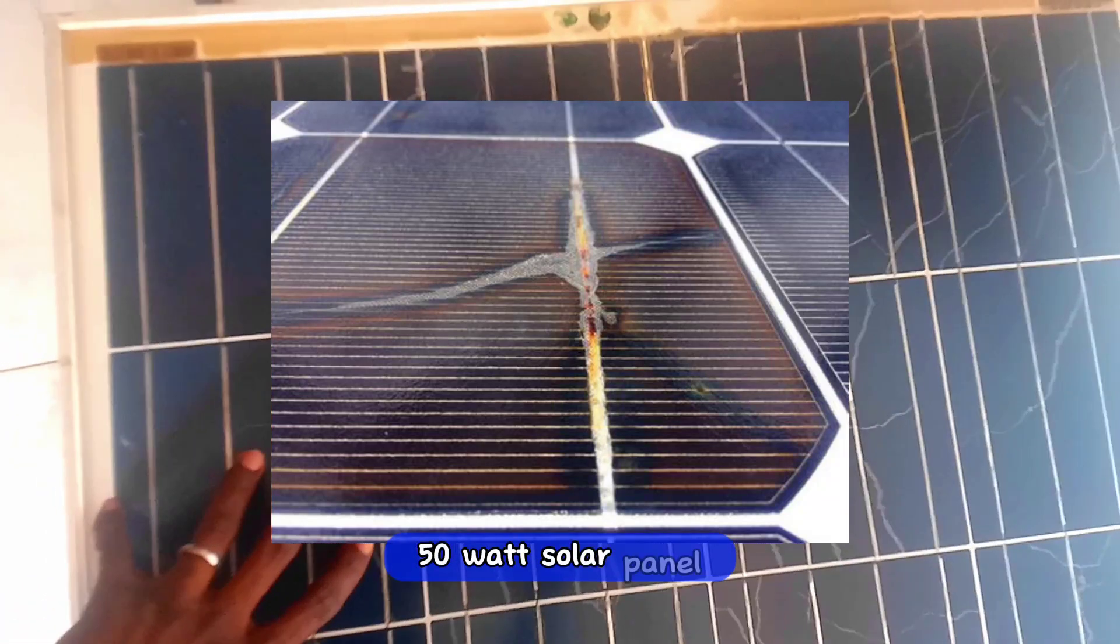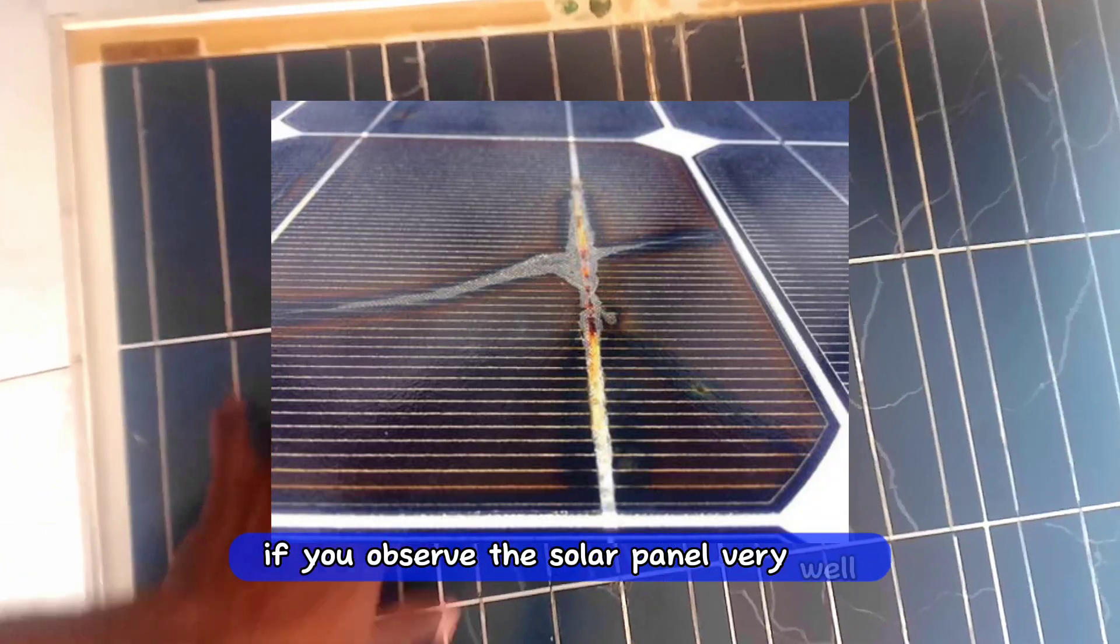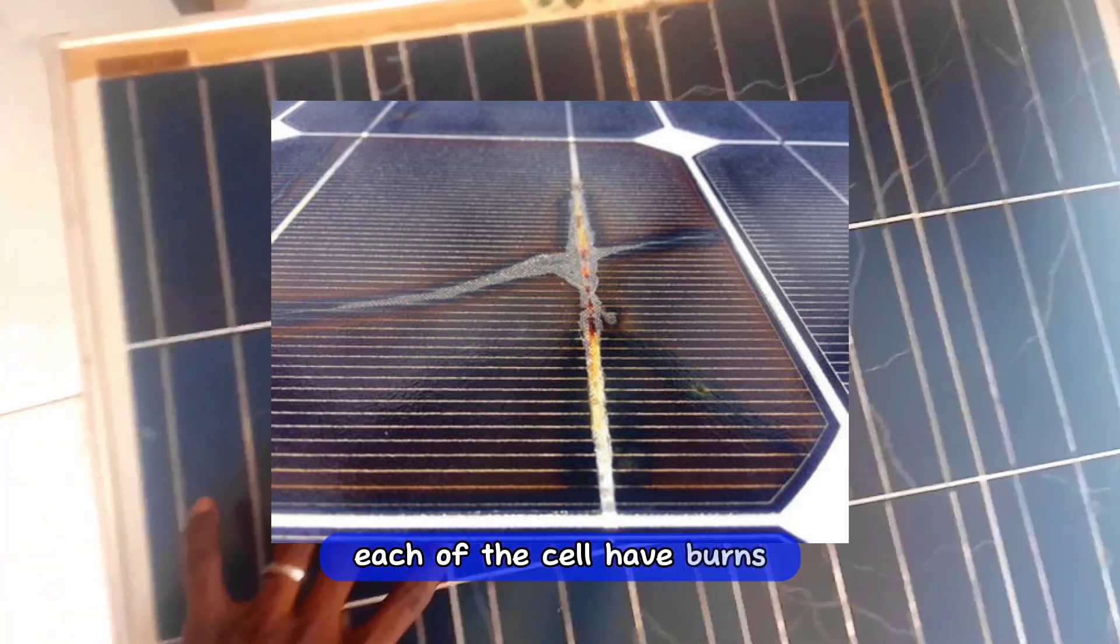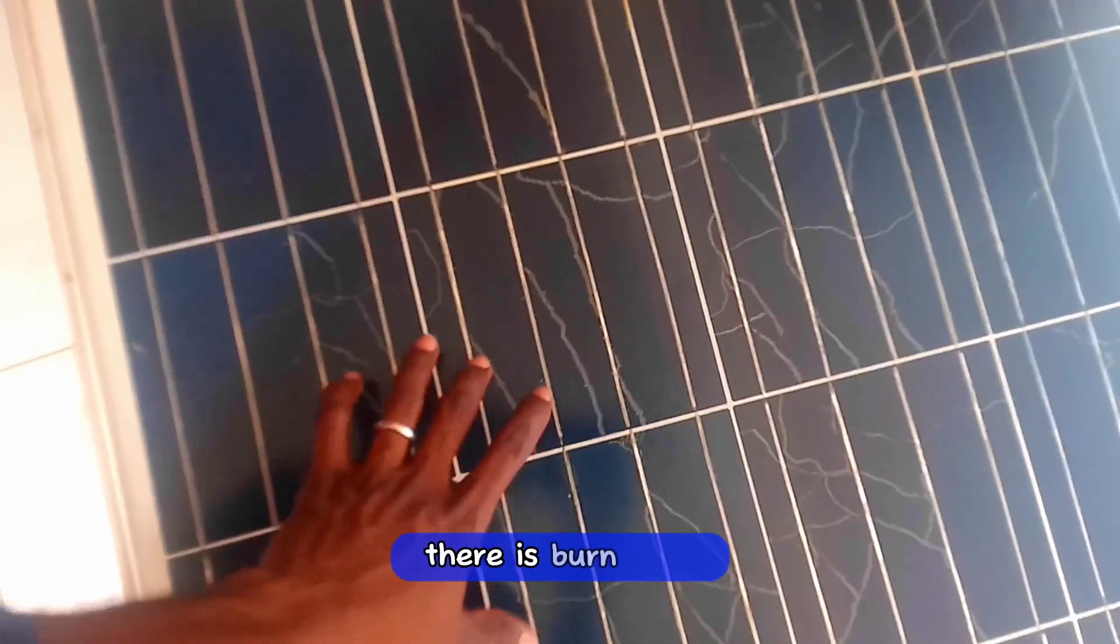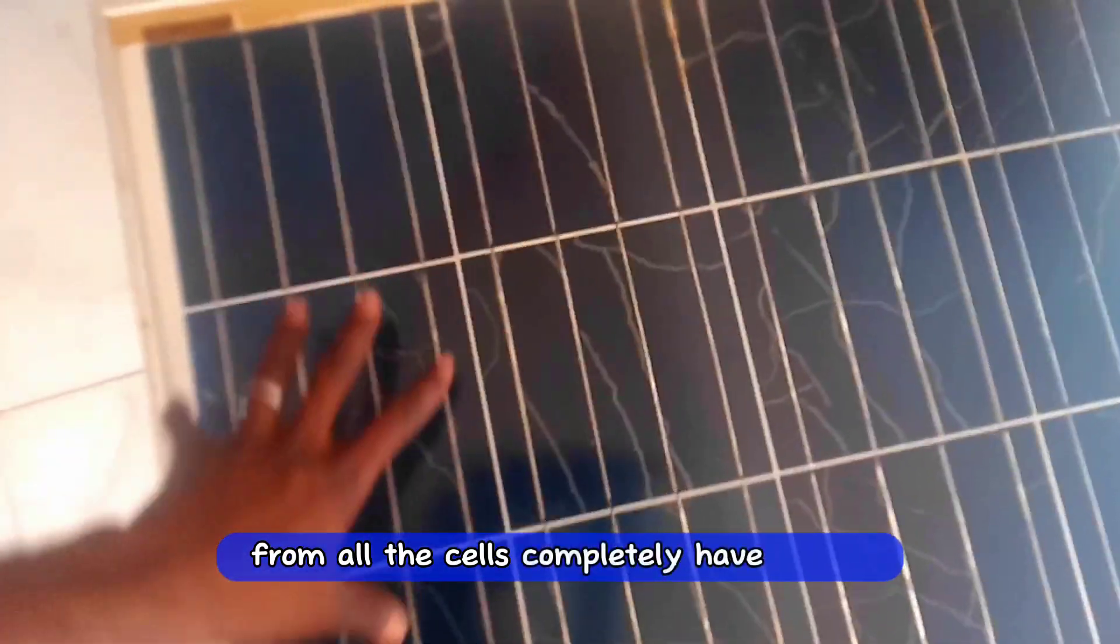This is a 150 watt solar panel. If you observe the solar panel very well, each of the cells have burns. You can see there is a burn here, there is a burn here - from all the cells, they completely have burns.